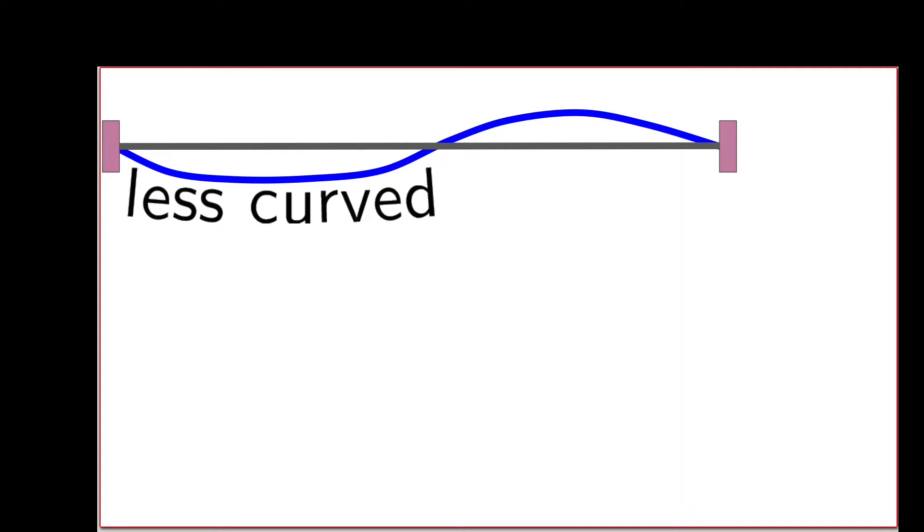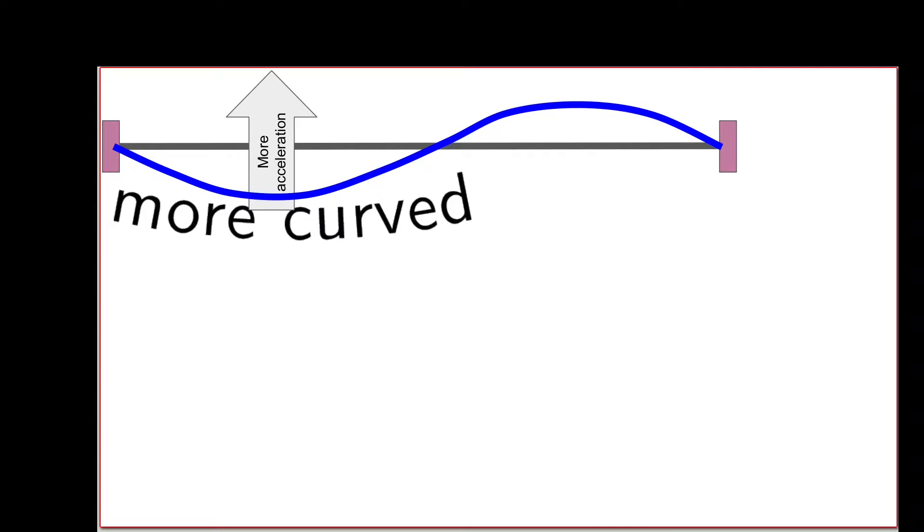To understand the behavior we saw in the ripple tank, let's start with a simpler example. Suppose I have two blocks that are firmly anchored, and between those blocks I stretch a string of uniform density. The string has length L and total mass capital M. Nothing's going to happen if we just leave the string there, so let's disturb it into a shape. The idea is that where the string has more curvature, it will accelerate more. Where it's less curved, less acceleration; more acceleration where there is more curvature.